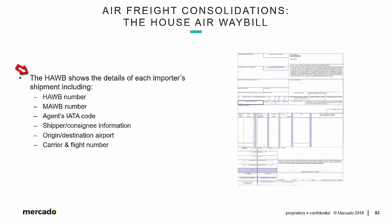The House Airway Bill shows the details of each importer's shipment, including the following. There has to be a unique House Airway Bill number that is issued sequentially by the freight forwarder. There's also what's called a Master Airway Bill — M-A-W-B — a document that governs the entire consolidation. We'll talk more about that in greater detail shortly. The agent's IATA code is the link to the accreditation that we spoke about previously.